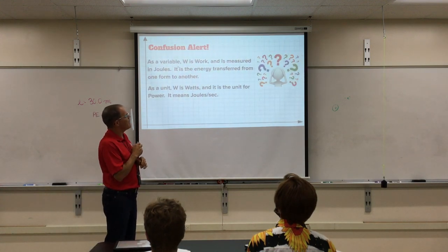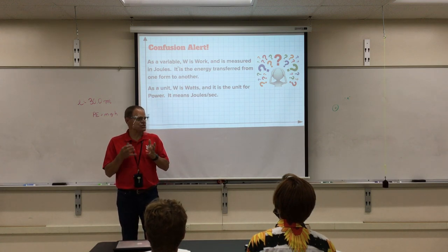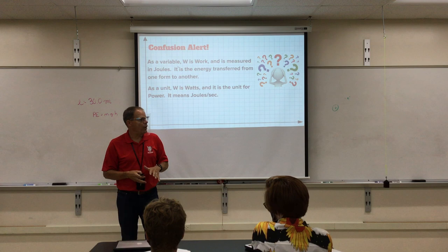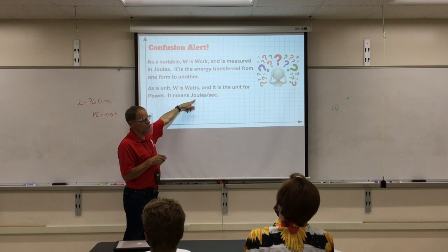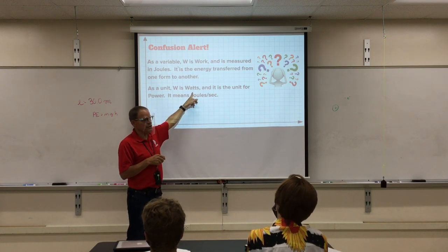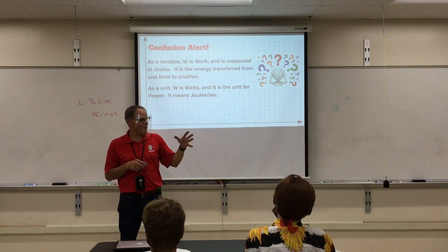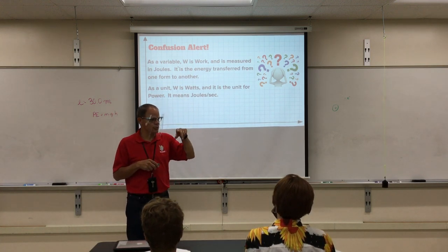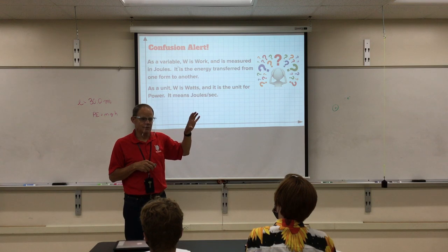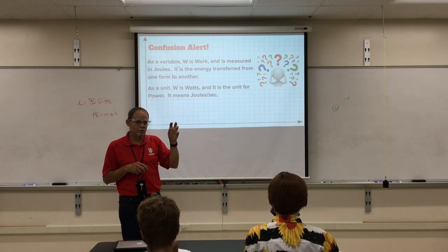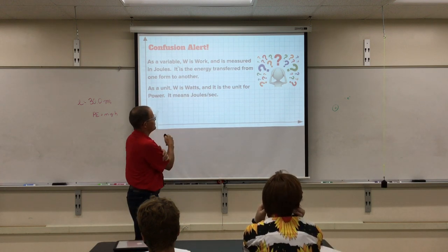Same thing happens with W. So there tends to be a lot of confusion. When we're talking about variables, W is the work. It's the energy transfer. When we are looking at units, W is a watt. It means joule per second. It's a unit of power, which is not work. Okay? So you've got to be careful when you're reading your homework problems and you see like 300 W, don't put that in the W line of your variable list. It's not W. It's P. Okay? When a unit is W, it means it's power. It's watts. I'll point that out again when we get to an example.